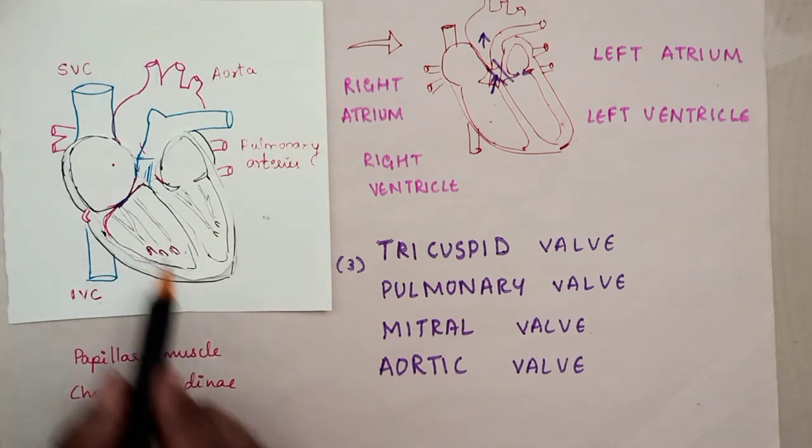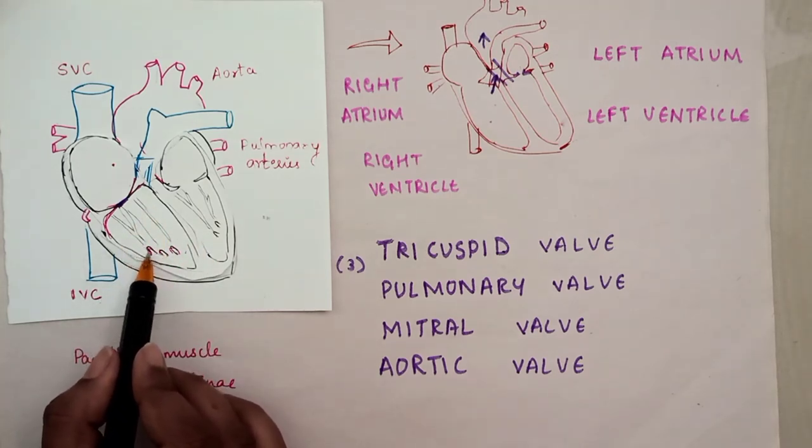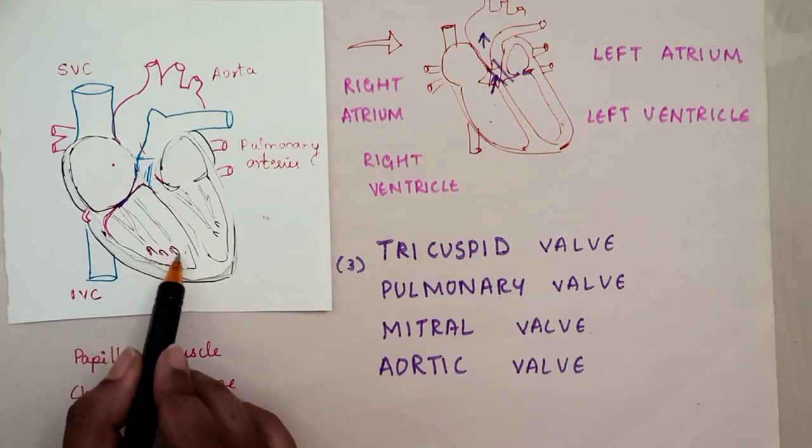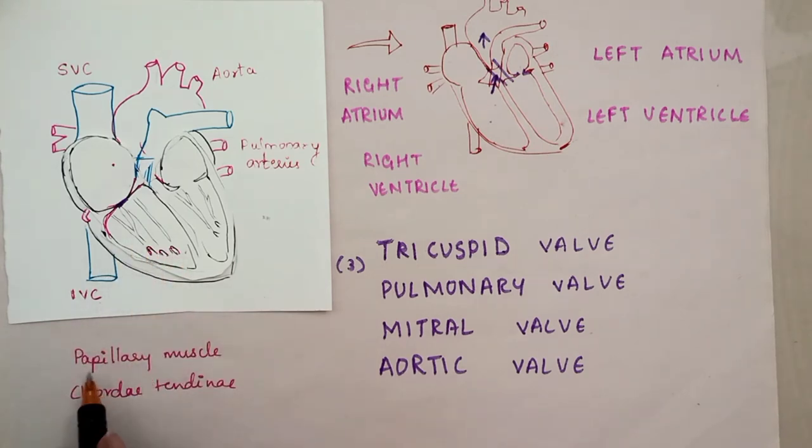These structures help hold the valves closed, preventing blood regurgitation when the valves close.